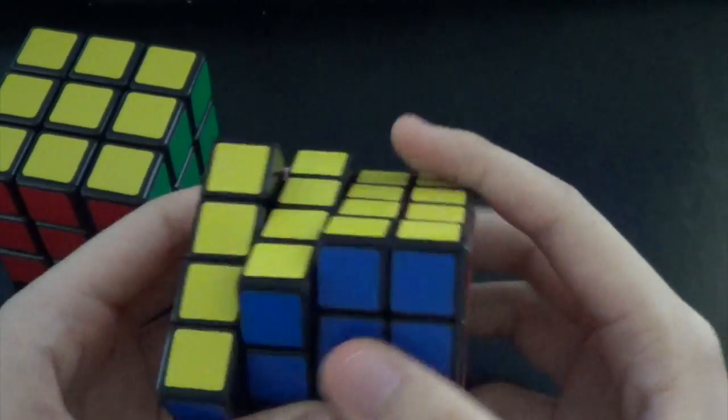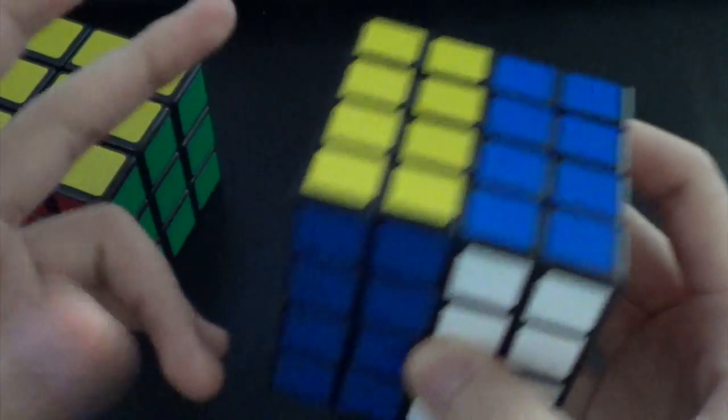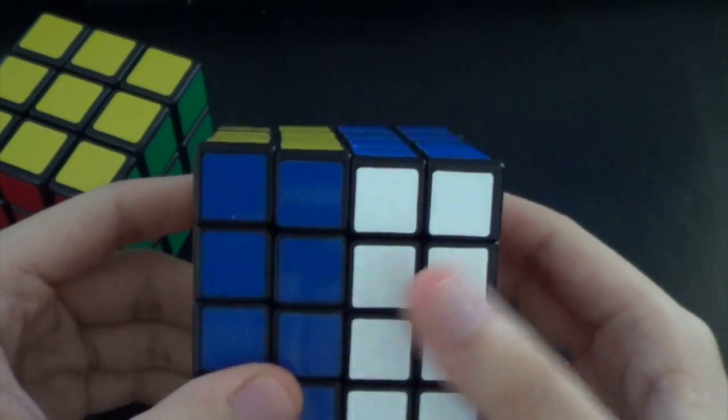That means when it's mixed up, the centers will be messed up. So that means you have to remember the color map of your cube.